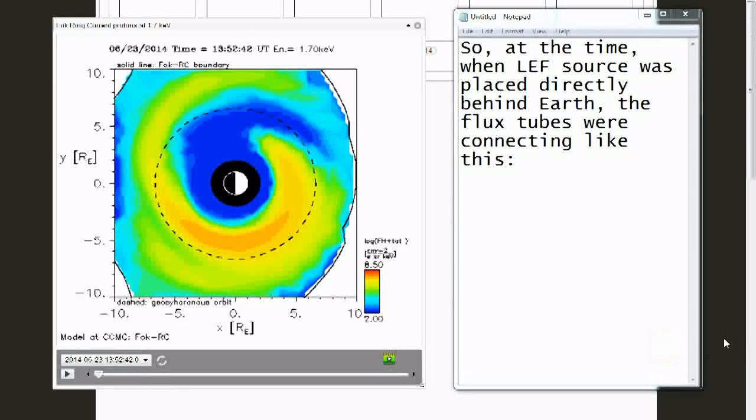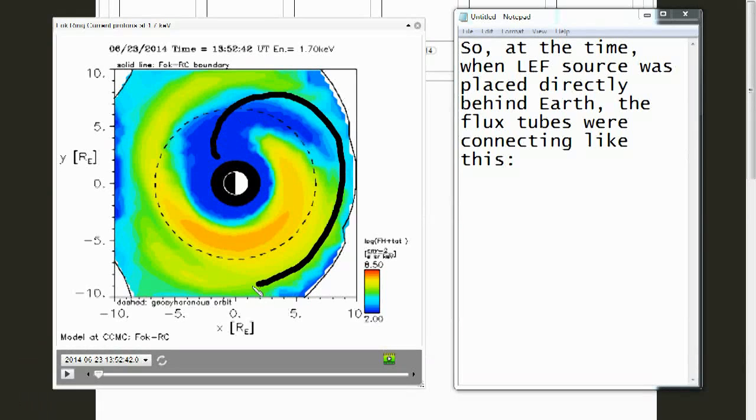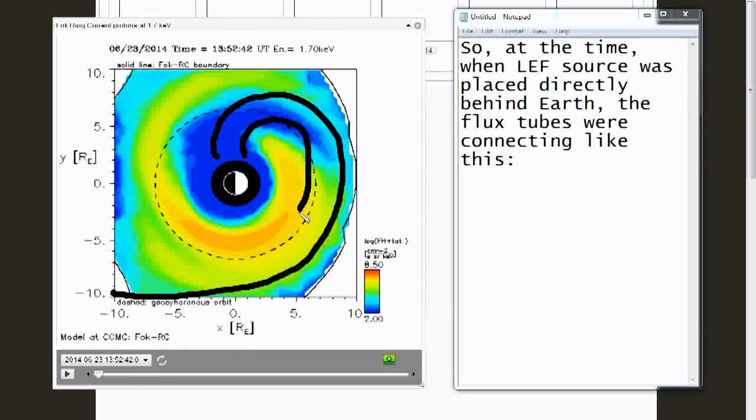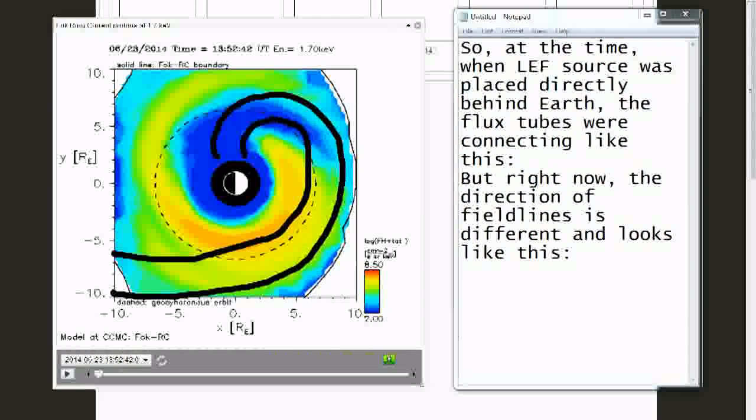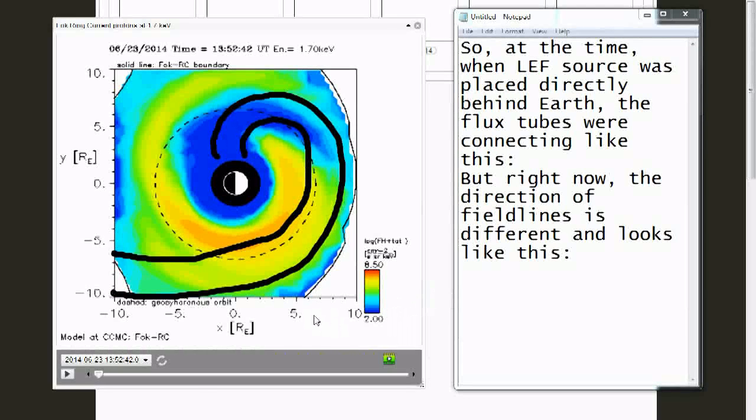So, at the time when low energy field source was placed directly behind Earth, the flux tubes were connecting like this. But right now the direction of field lines is different and looks like this.